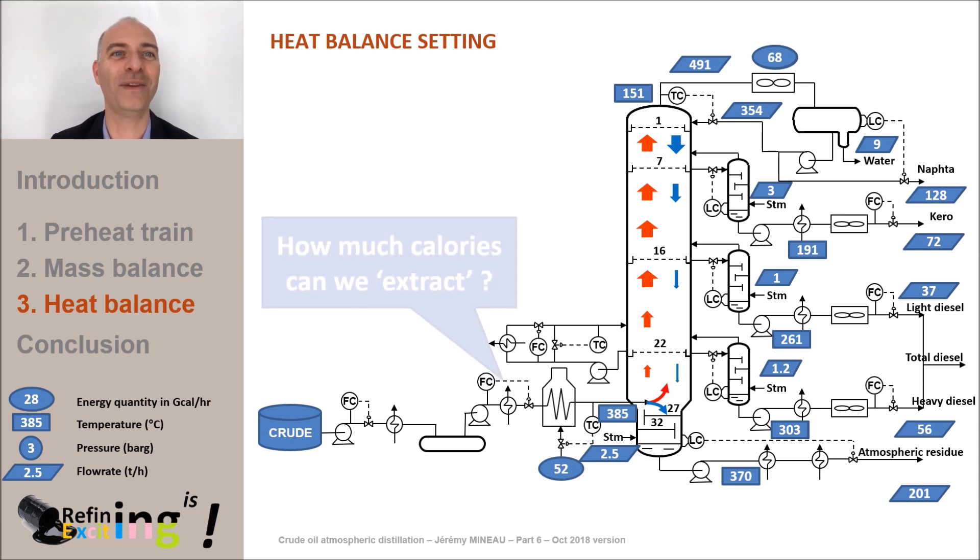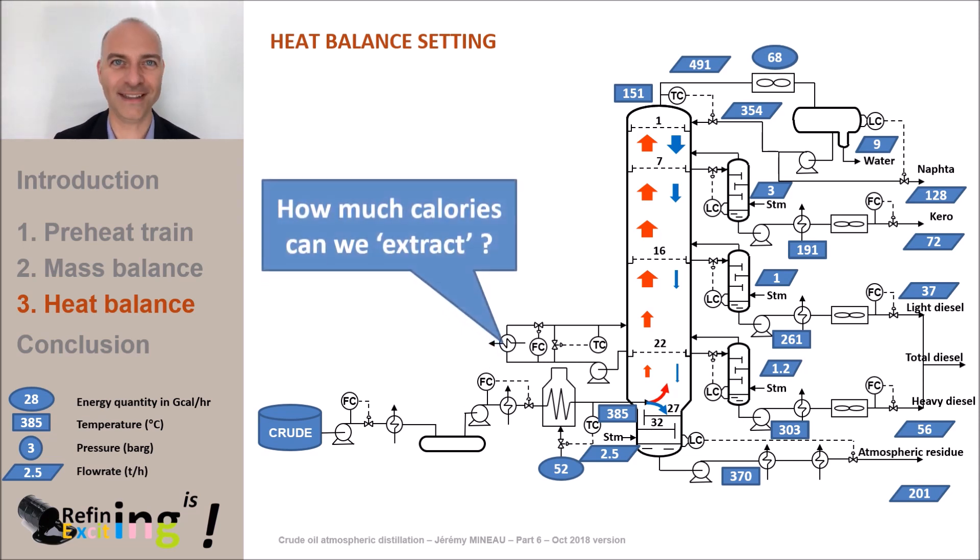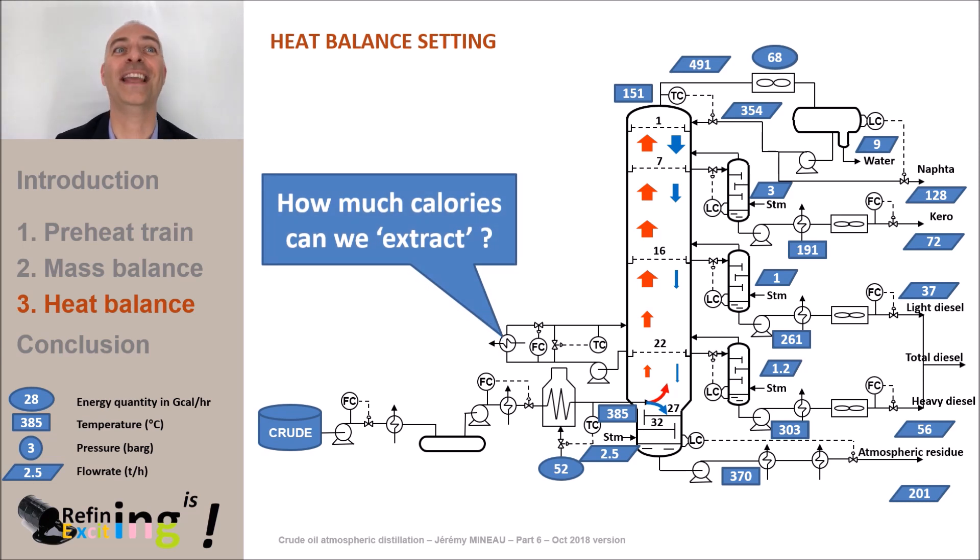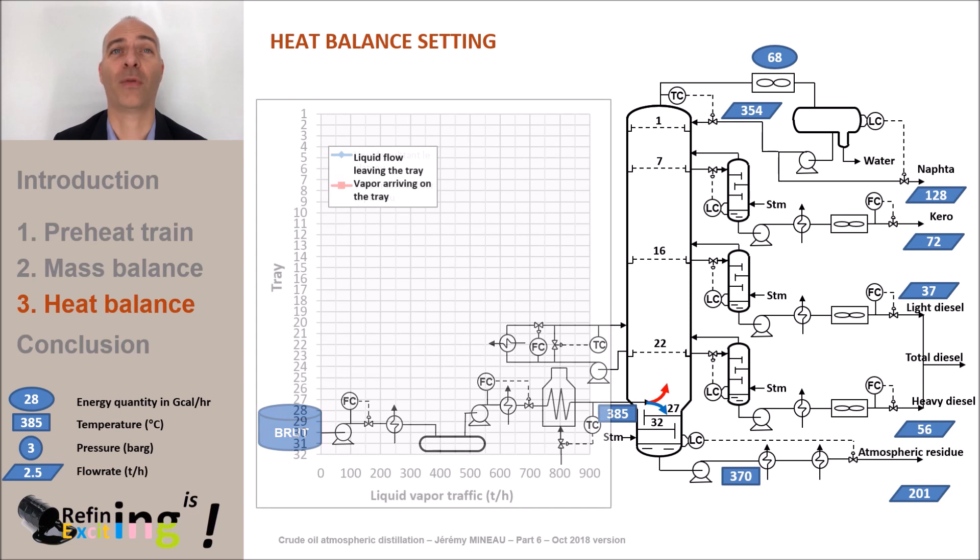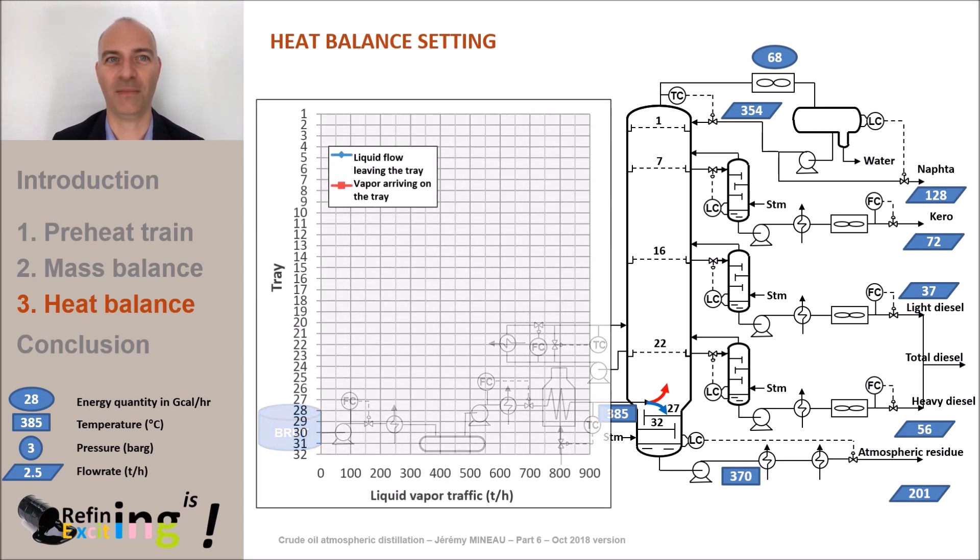So, how much calories can be removed? And most importantly, to remove these calories at an interesting thermal level, is it penalizing for the separation efficiency in the column? We have seen in the previous videos how the liquid-vapor traffic in the column was established.